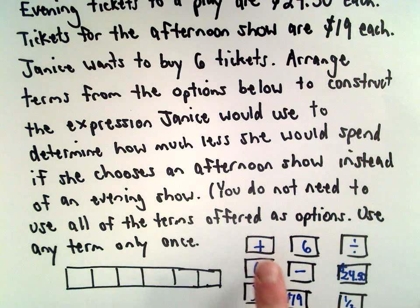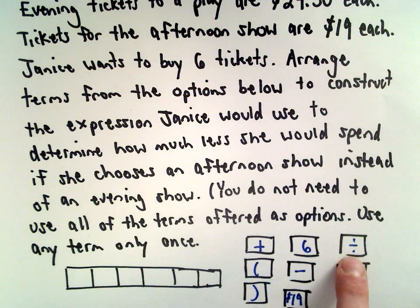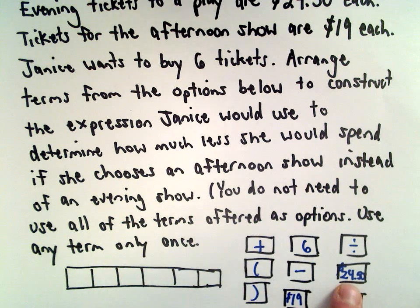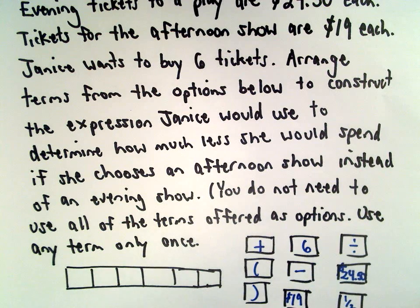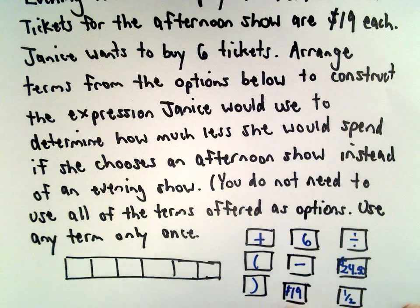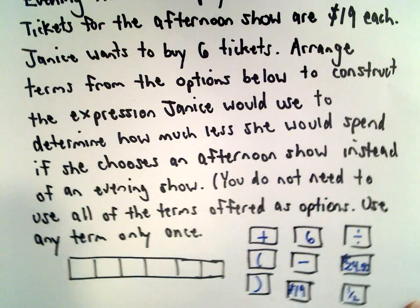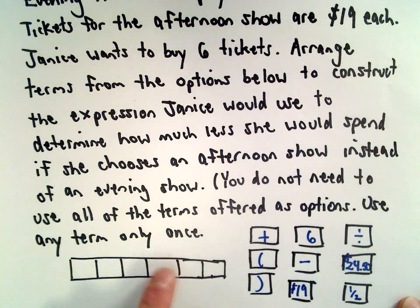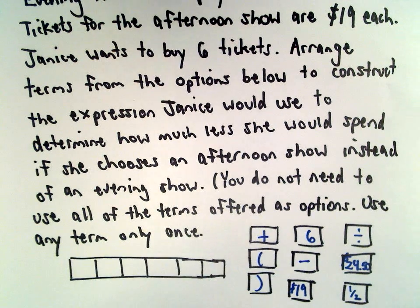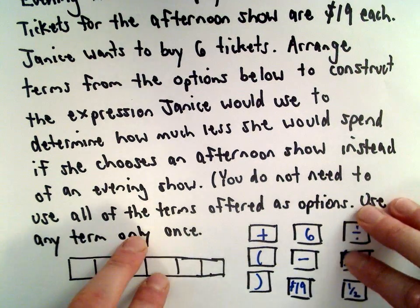So we've got these symbols: plus, the number six, division, left parenthesis, minus, the dollar amount $24.50, right parenthesis, $19, and the other choice is one half. So we've got six boxes we have to fill in.